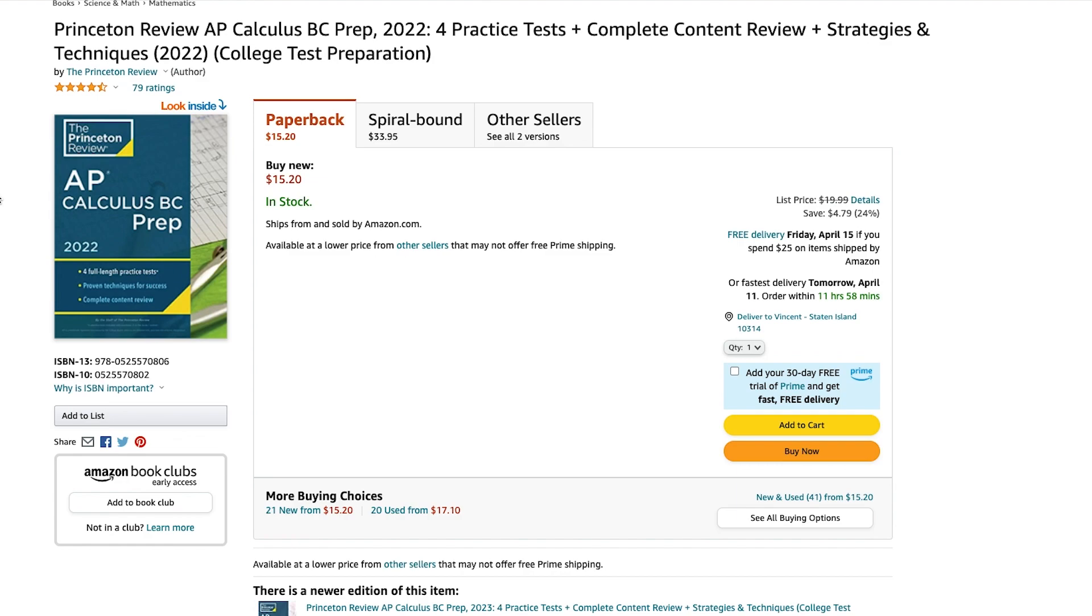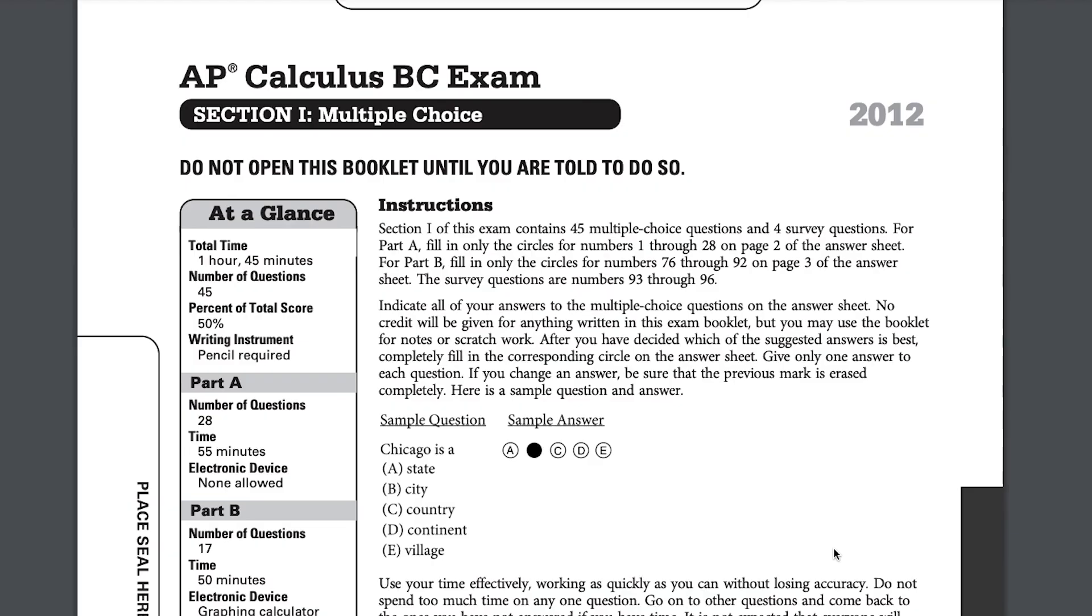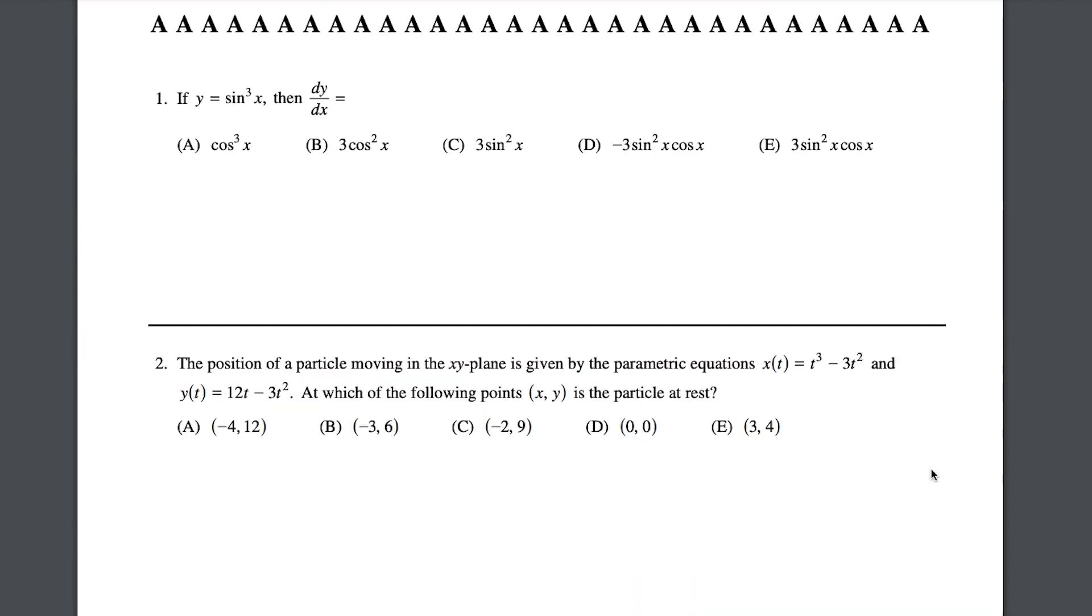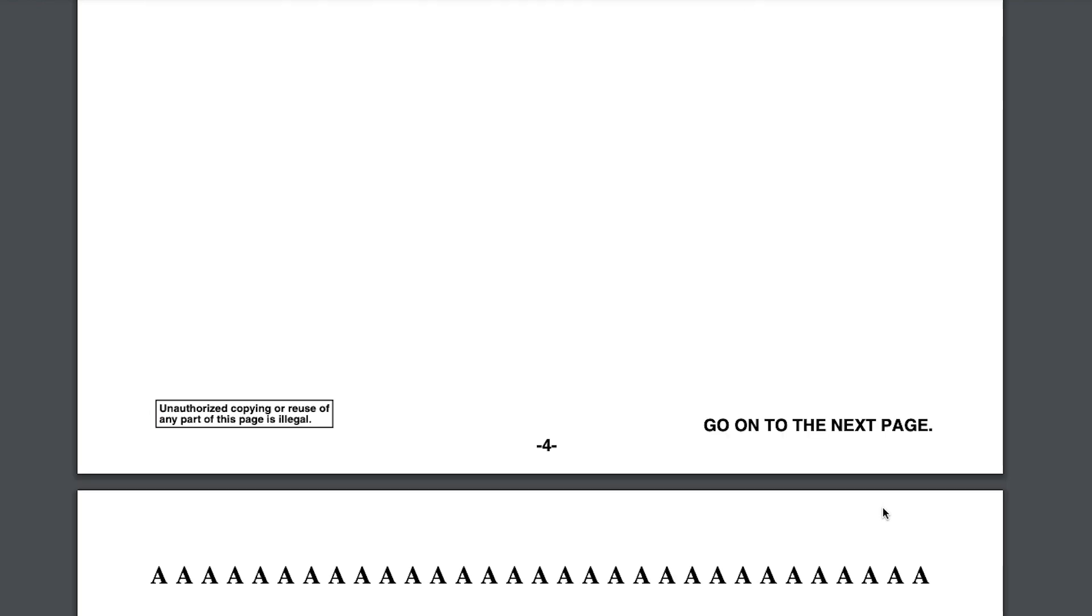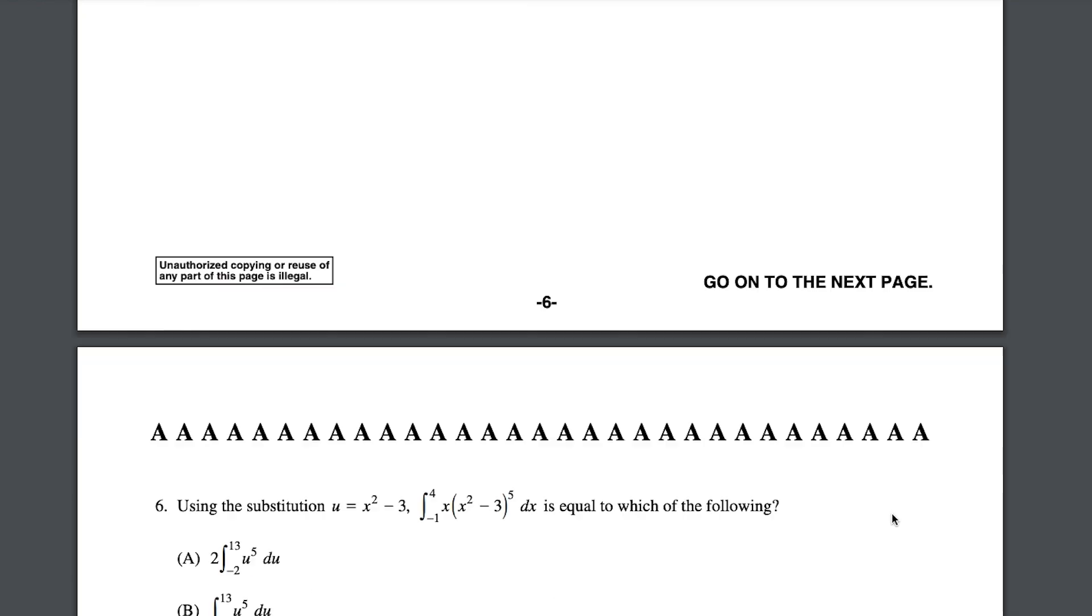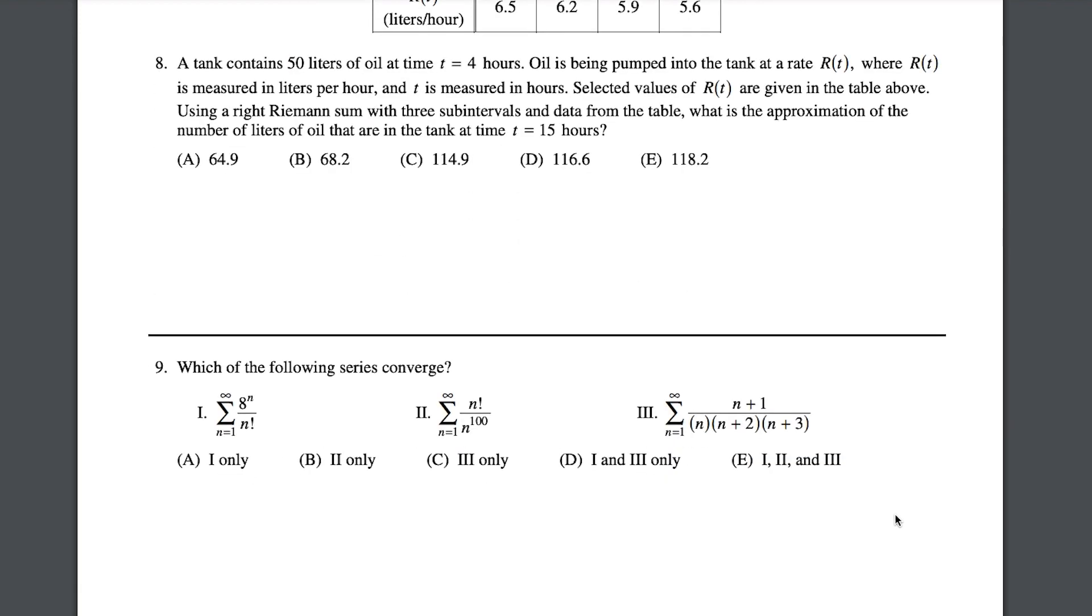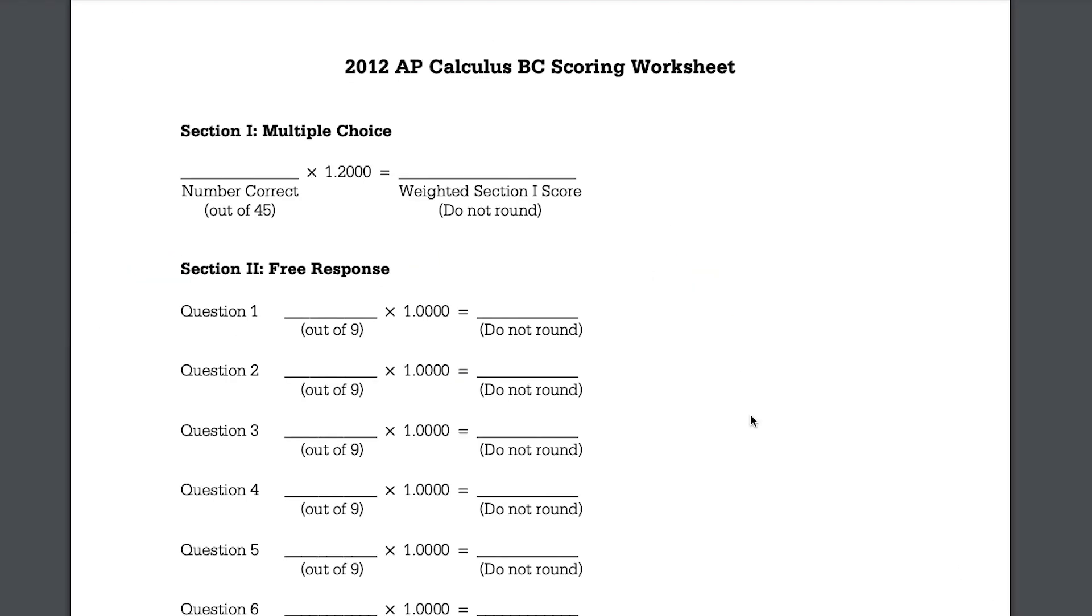Now, there are plenty of free practice exams you could go through if you don't want to buy a book, such as the 2012 exam. So when you're going through an exam like this one, just make sure that you're timing yourself based on how much time you'll actually get for the real AP test. So when you get to the end of the exam, use the scoring worksheet to give it a grade.